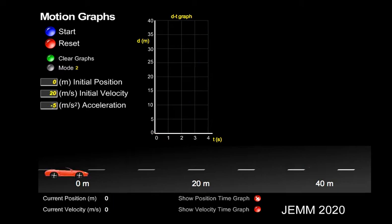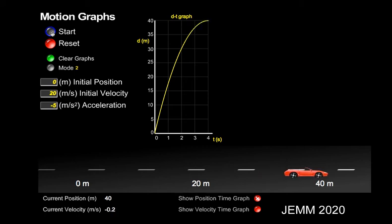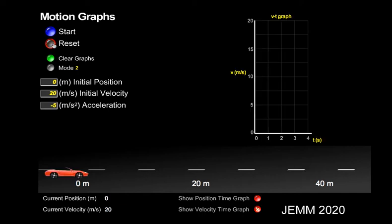The final situation I want to look at is an object that is not speeding up but slowing down. I've given the initial velocity as 20 meters per second and the acceleration is negative 5 meters per second per second. Let's see what that looks like for a position time graph. Initially at 20 meters per second, its acceleration is negative 5 meters per second per second.